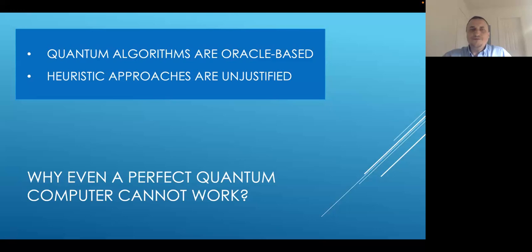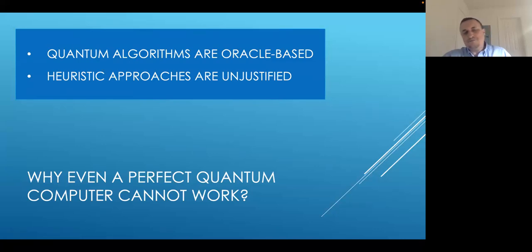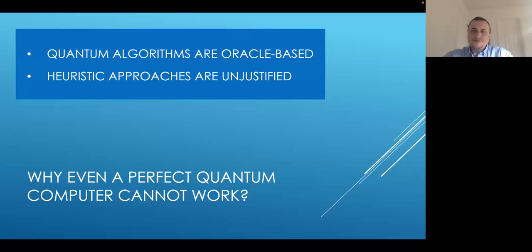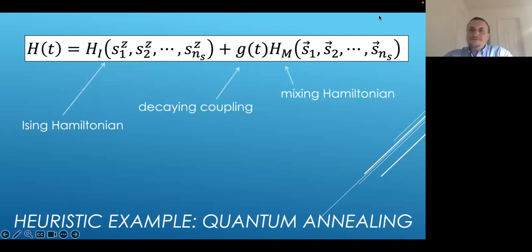There are separate reasons for different approaches. For gate-based quantum computing and standard quantum algorithms, at some point they assume that something is given for free, but in reality we find that we need some exponentially large additional resource. Similarly for quantum annealing, it is formally not mathematically justified — there is no proof that it works, and there is growing evidence that in its original format it needs some additions to solve problems faster.